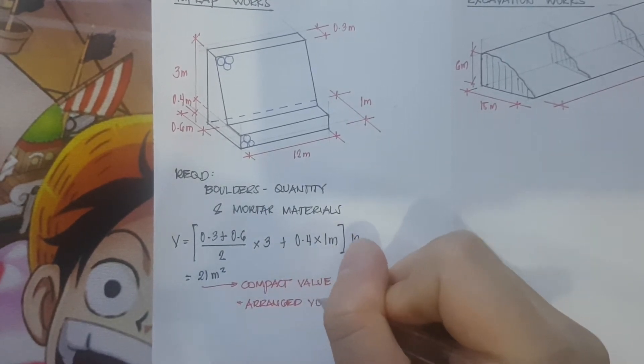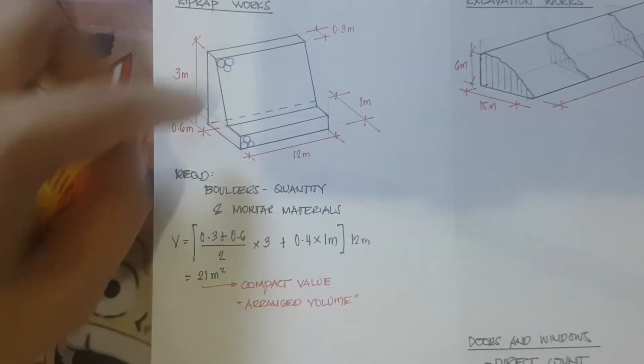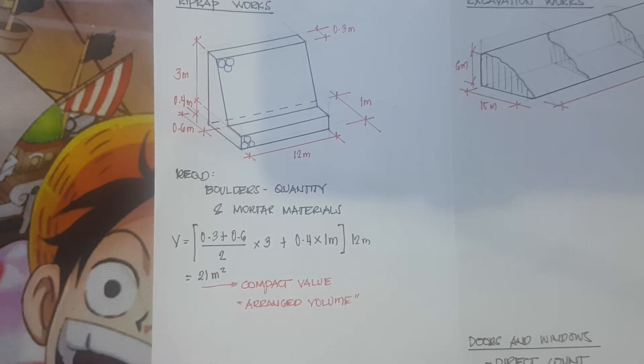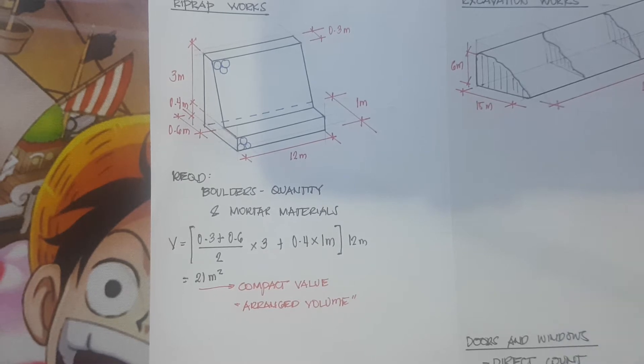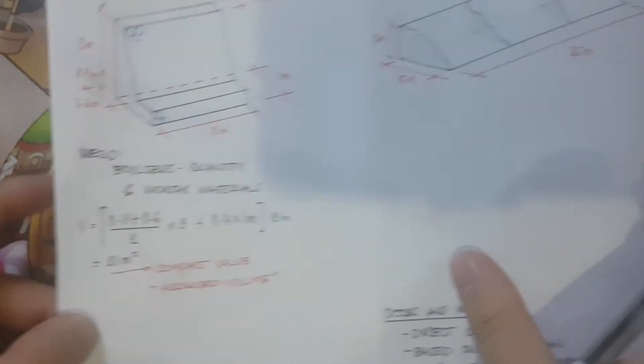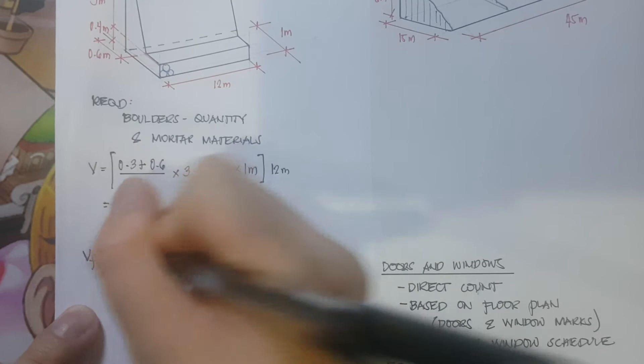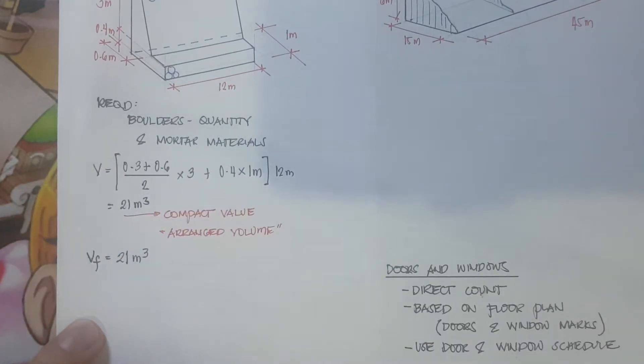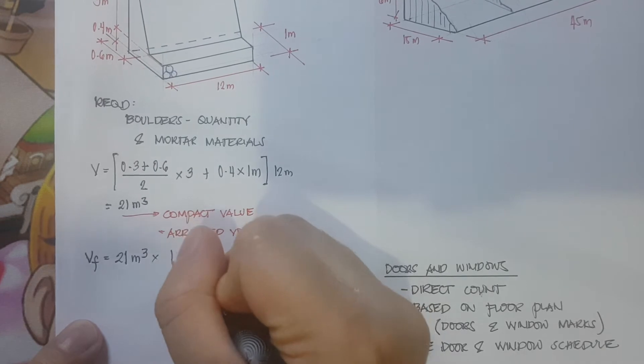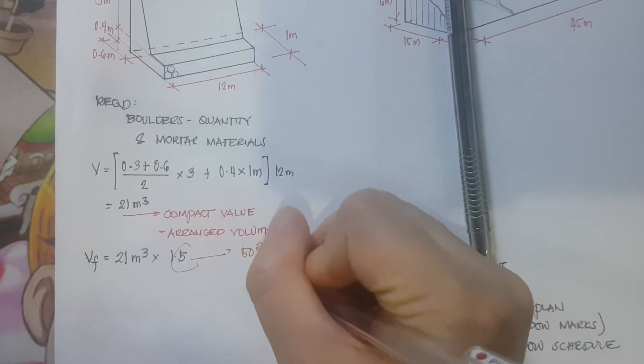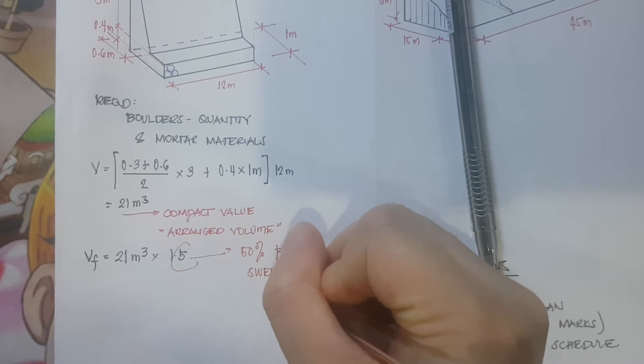We call it arranged volume because when we determine the volume it was already arranged based on its final appearance or final dimension. But in estimating for reprop we need to consider that there will be a swelling factor. To determine the final volume, VF is equivalent to 21 cubic meters times 1.5. We use 50 percent for swelling factor.